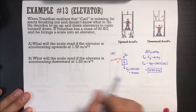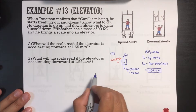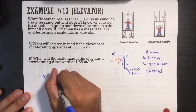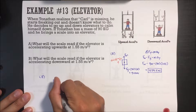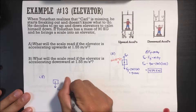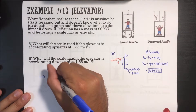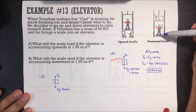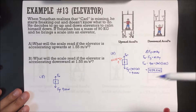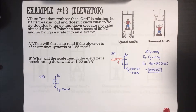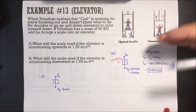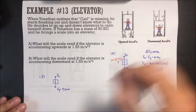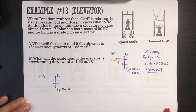Part B: what will the scale read if the elevator is accelerating downwards at 1.55 meters per second squared? Same scenario except instead of accelerating upwards, we're accelerating downwards. Force of gravity is always the same — mass times acceleration of gravity. If you're accelerating downwards, it's almost as if you're feeling lighter because you're almost coming off the ground a little bit, so you won't have as much pressure on the ground. The normal force should be less than the force of gravity.